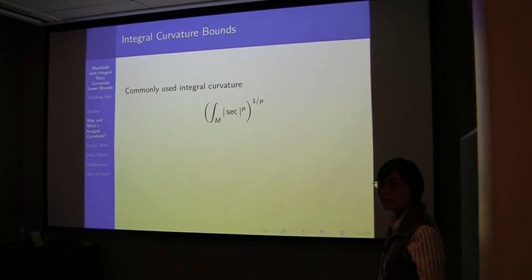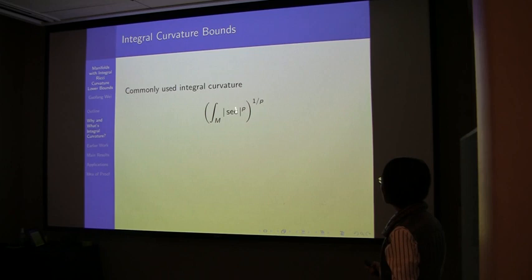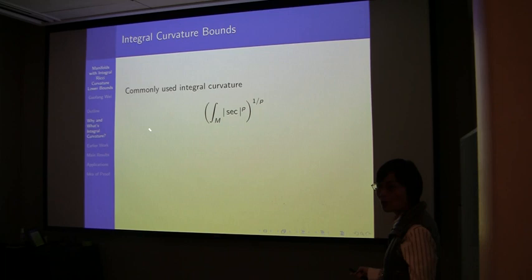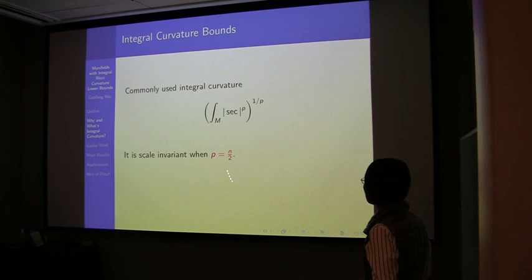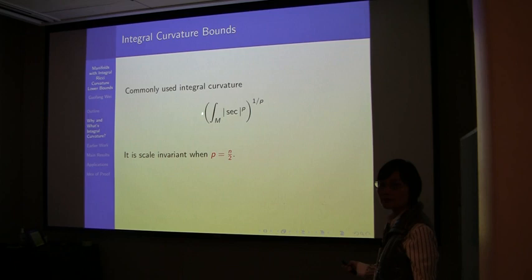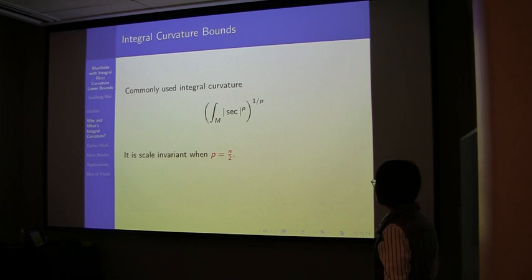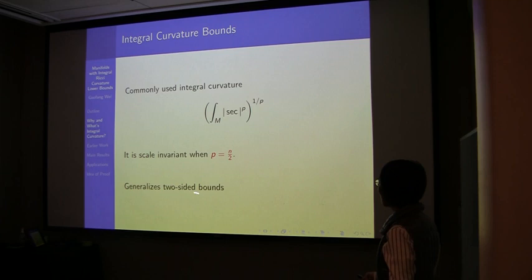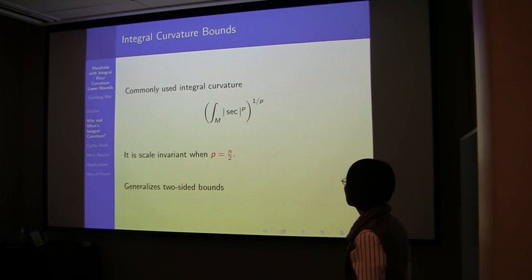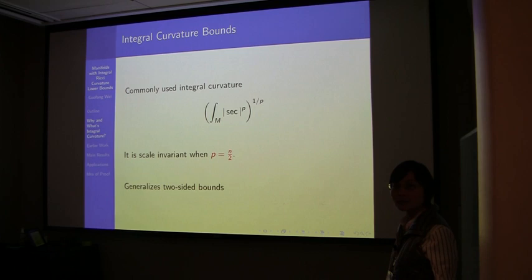What is integral curvature? Usually we take the sectional curvature, take some maximal both-sided value, and integrate — it becomes a function and you take an Lp norm. When p equals n over 2, this is very special because the quantity is scale invariant: if you rescale the curvature and the volume they compensate each other at the middle dimension. So this quantity can be thought of as an extension: if you have sectional curvature with a pointwise two-sided bound, then this integral version is finite, but we are interested in what happens if you only have a one-sided curvature bound.